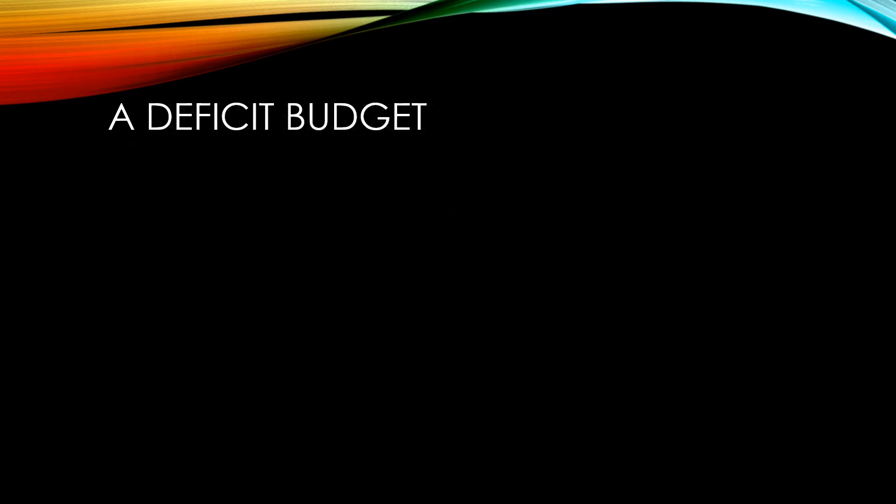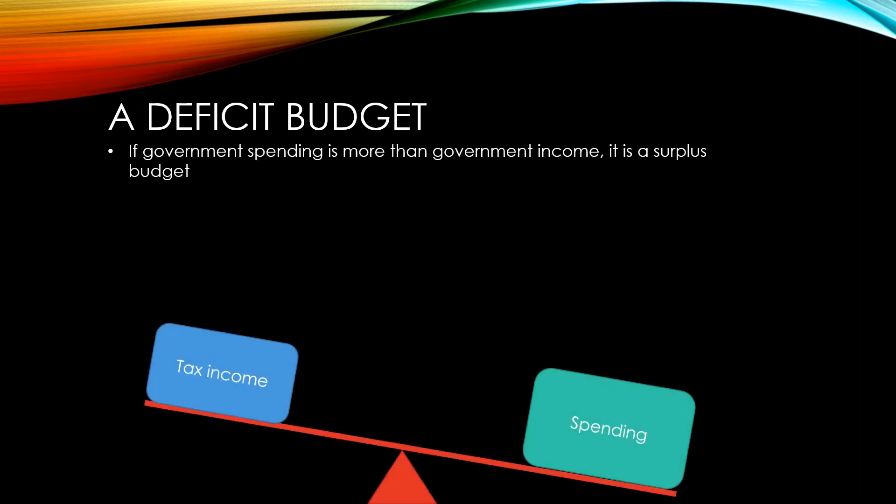If planned government spending exceeds expected government income, then what we have is a deficit budget. This might happen because the government spends more or because they reduce taxes.